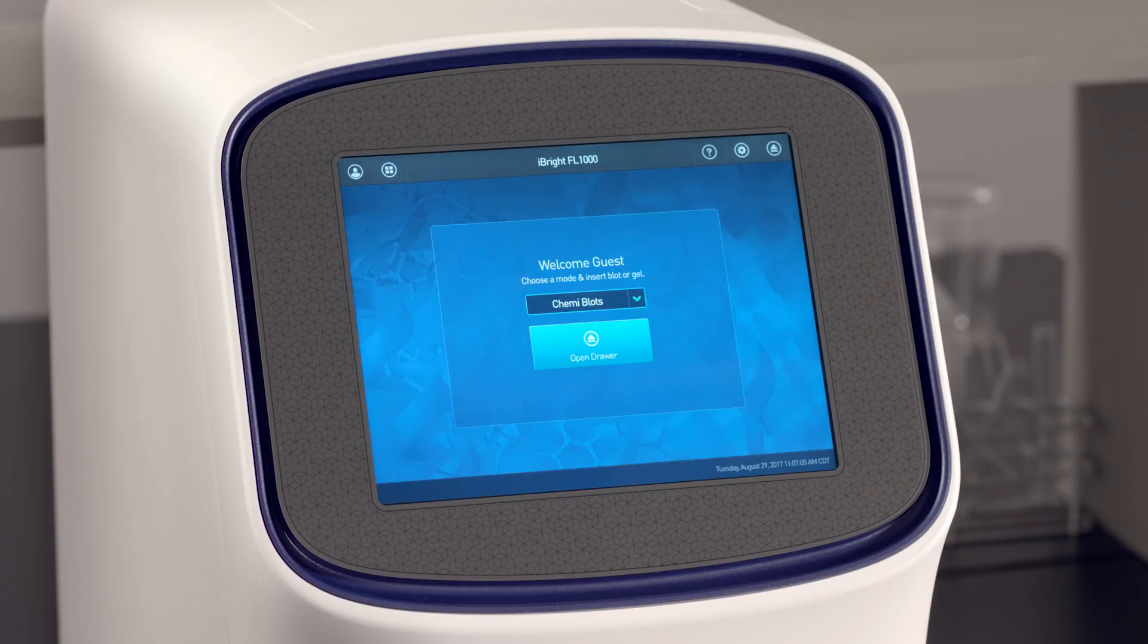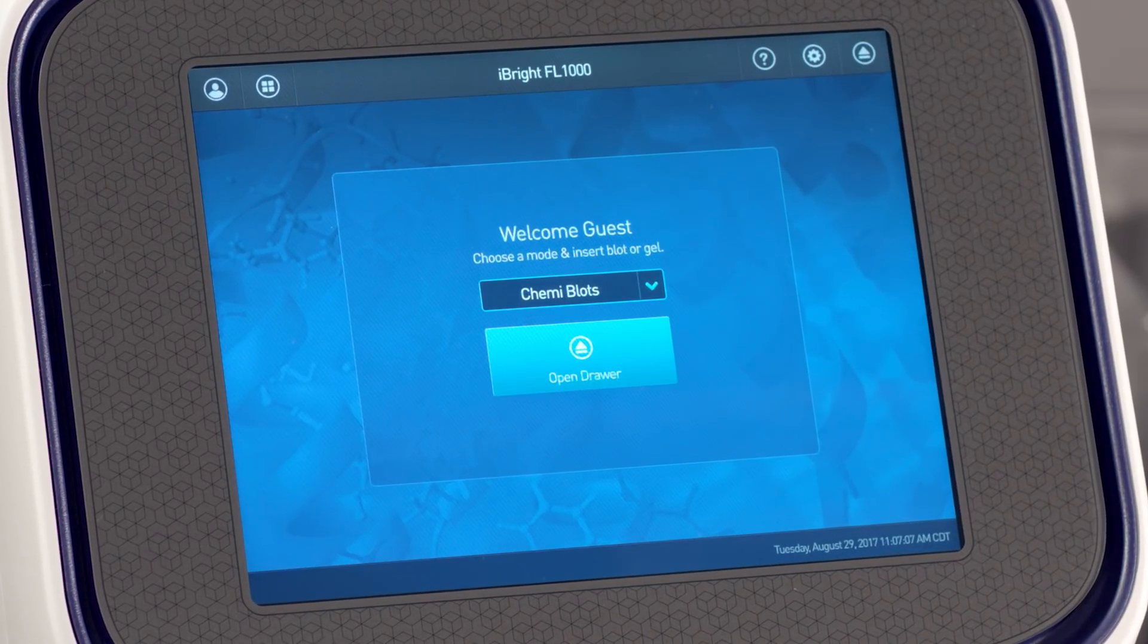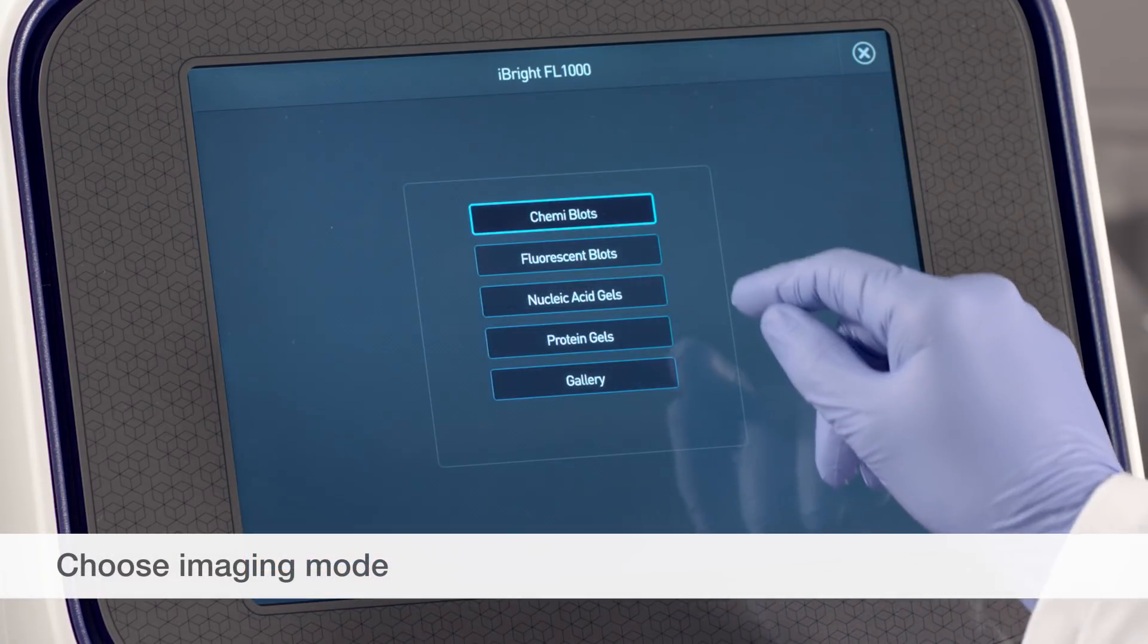Capturing images within Vitrogen Eyebrite imaging systems is fast and simple. Under the drop-down menu, select an imaging mode.